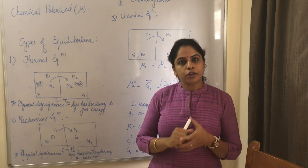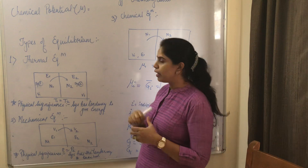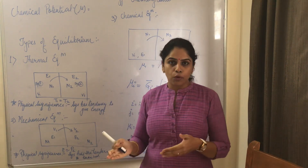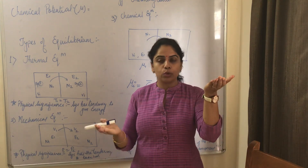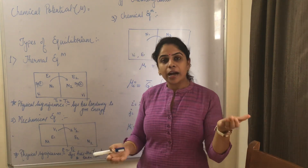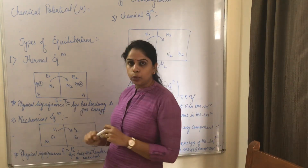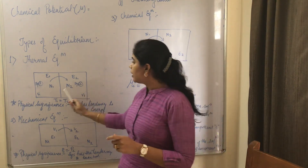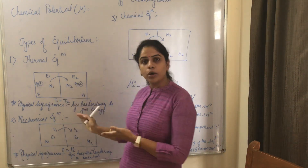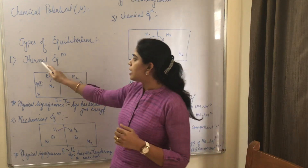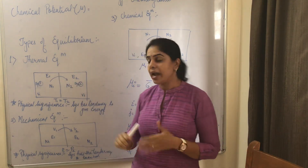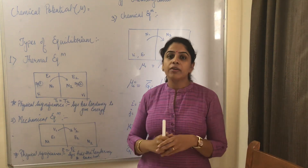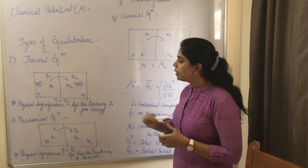Let's discuss the types of equilibrium. First is thermal equilibrium — in this, energy tends to flow from high temperature to low temperature, and this continues until T1 is equal to T2. T1 is the temperature of system 1 and T2 is the temperature of system 2. When T1 equals T2, we can say the system is in thermal equilibrium. The physical significance of temperature is that the system has a tendency to give energy.